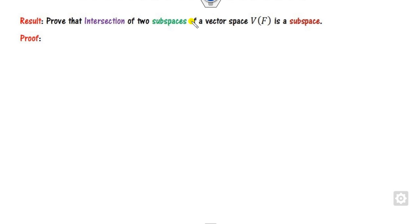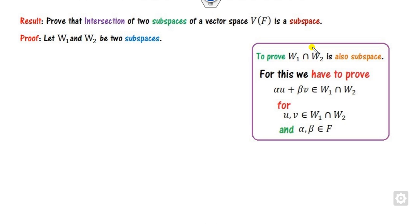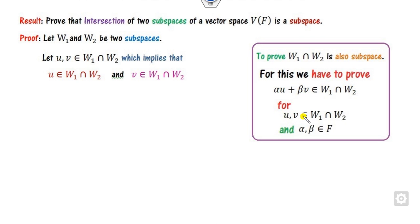Now our target in this presentation is to see whether the intersection of two subspaces is also a subspace. What is given to you? Consider that W1 and W2 are two subspaces. Then your target is to prove that their intersection is also a subspace. As per the definition, you take two elements from their intersection and a scalar from the field, and you have to show the linear combination stays in the intersection.